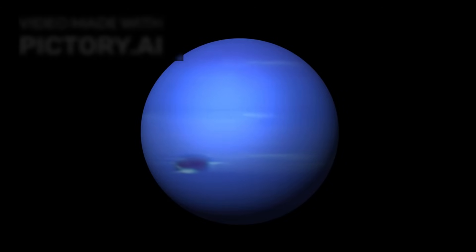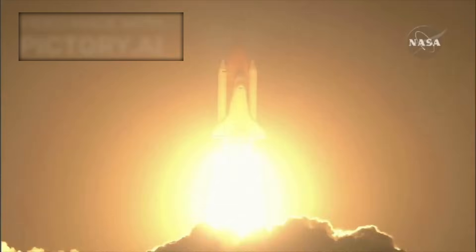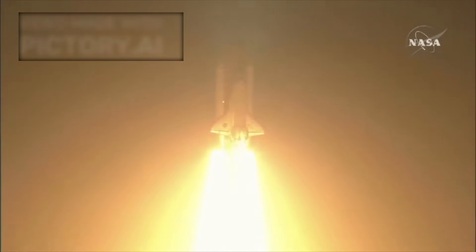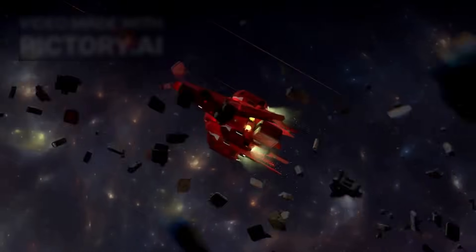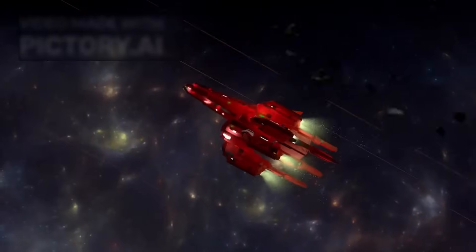Thanks to Voyager 2, we learned that Uranus has a tilted magnetic field and that Neptune has the fastest winds in the solar system. These weren't just planetary pit stops, they were scientific awakenings. But what happened after those historic encounters was something truly remarkable.